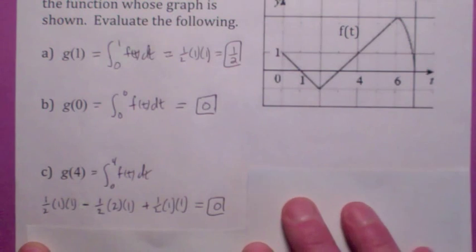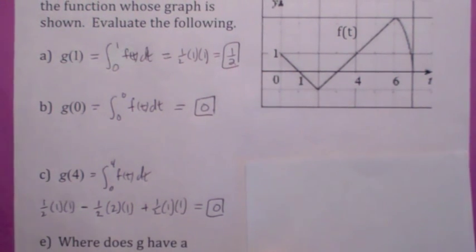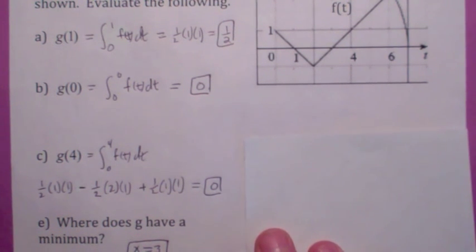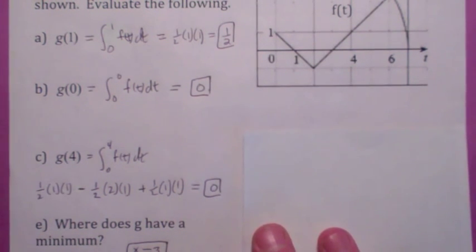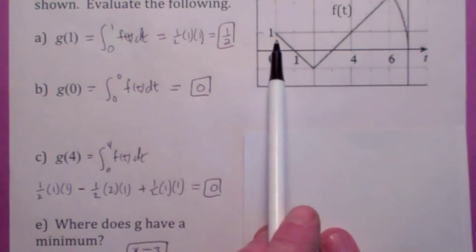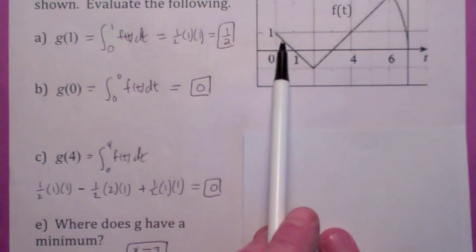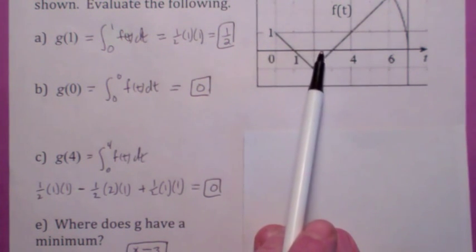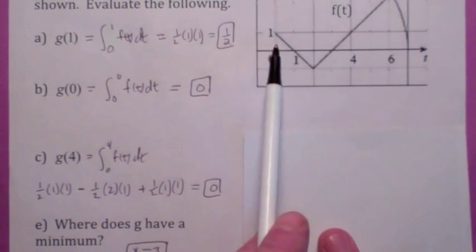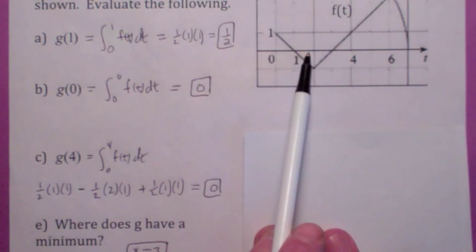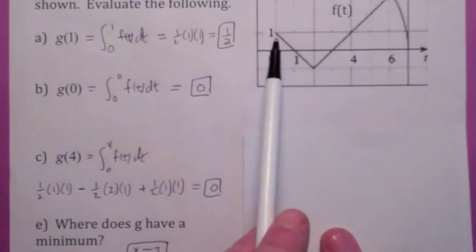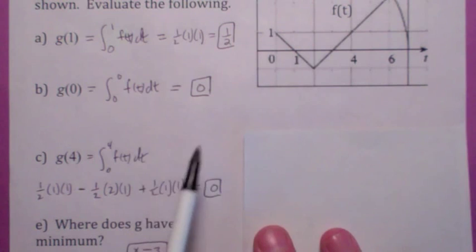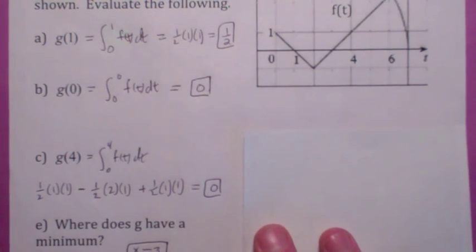Where does g have a minimum? g is the area-so-far function. From 0 to 1 you're adding positive area, so g is going up. After that you're subtracting area, so g is going down — that's a local max. Then at 3, you go from adding negative area to adding positive area again, so g starts going up after 3. At x equals 3, g has a local min — it's actually an absolute min too. So the answer is x equals 3.